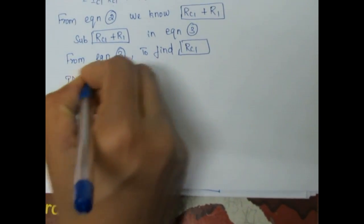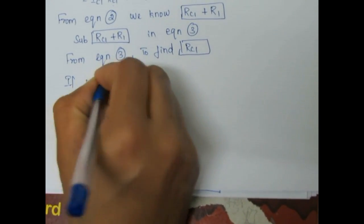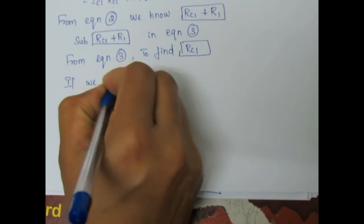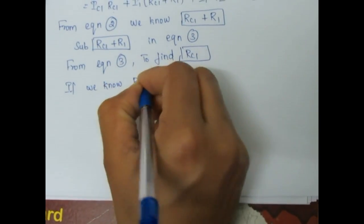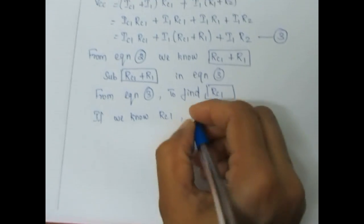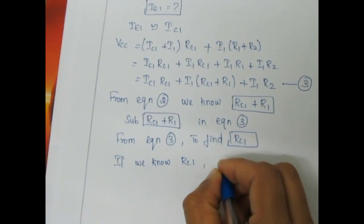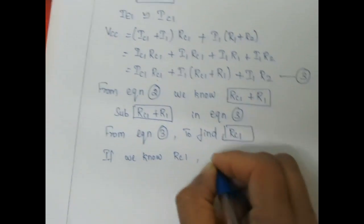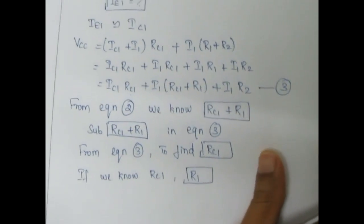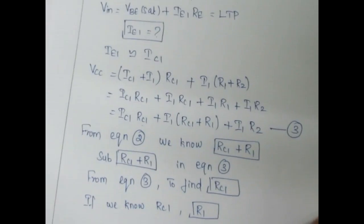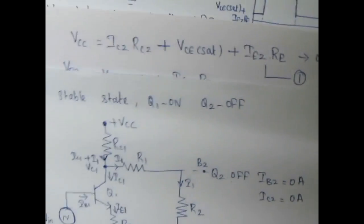Once we know RC1, we will be able to find R1. By this way, we will be able to find all the resistor values in the Schmitt trigger circuit.